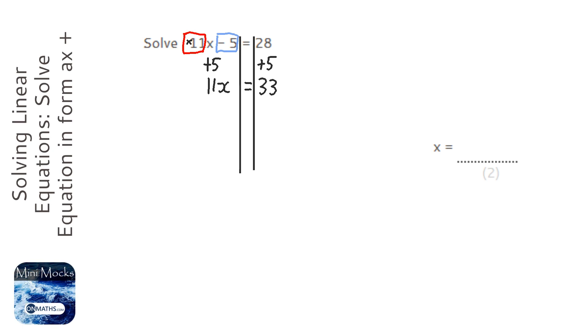Next we need to get rid of that times 11. To do that, we do the opposite of times 11, which is divide by 11. So we're going to divide both sides by 11.